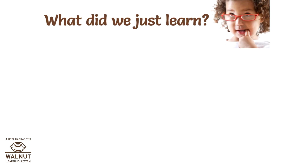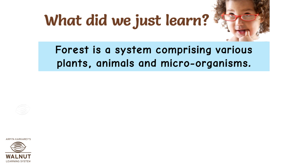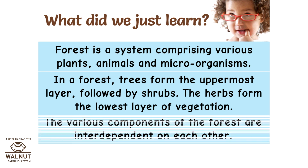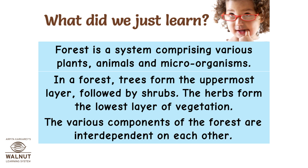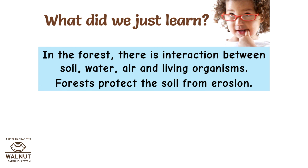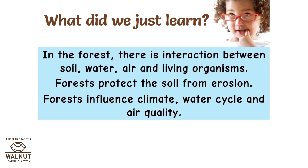What did we just learn? A forest is a system comprising various plants, animals, and microorganisms. In a forest, trees form the uppermost layer, followed by shrubs, and herbs form the lowest layer of vegetation. The various components of the forest are interdependent on each other. There is interaction between soil, water, air, and living organisms. Forests protect the soil from erosion and influence climate, water cycle, and air quality.